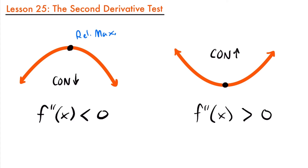On a function like this where it is concave up, if we have a critical value where the slope is zero, it's going to be a relative minimum. This is the lowest point in this area, just like the relative maximum is the highest point in that area. So when you have a critical value on a function and that function is concave up in that region, then that critical value is a relative minimum. That's the premise of the second derivative test.